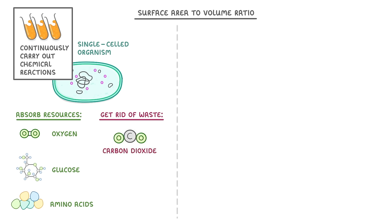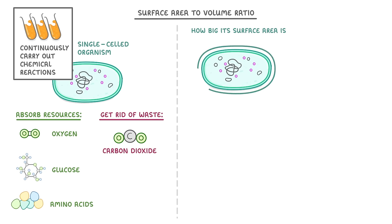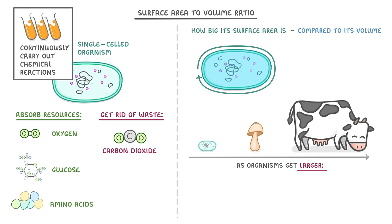How well it can do this depends on its surface area to volume ratio, which is basically a measure of how big its surface area is, so this area around the outside, compared to its volume, which is all of this space inside the organism. The key idea of this video is that as organisms get larger, for example comparing this single bacterial cell to a mushroom or a cow, their surface area to volume ratio decreases, which is just the technical way of saying that larger organisms have less surface area compared to their volume.